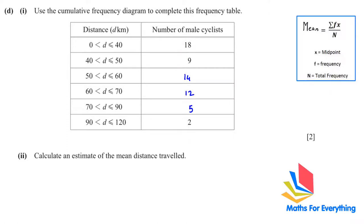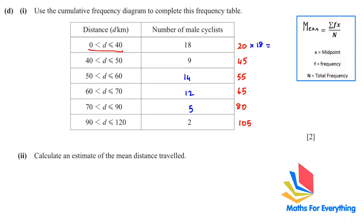Find each midpoint by adding the class boundaries and dividing by 2: for 0–40 → midpoint 20; for 40–50 → midpoint 45. Then multiply each midpoint by its corresponding frequency.